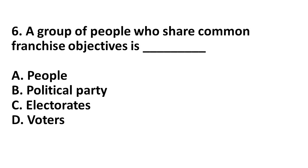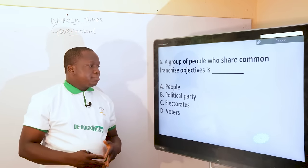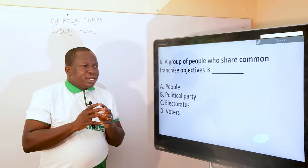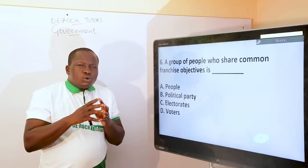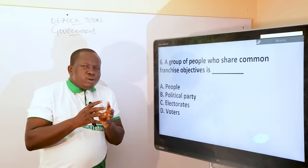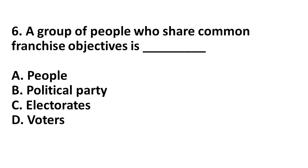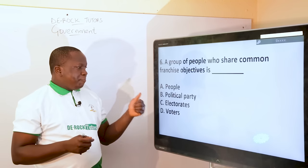Next question: a group of people who share common franchise objectives. In government, franchise refers to the right to vote and be voted for — another word for franchise is suffrage. A group of people united in their political agenda, with the same political objective: which human association consists of people with the same political agenda and objective? The answer is political party. The correct answer is B.